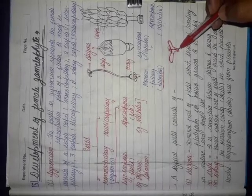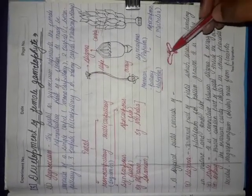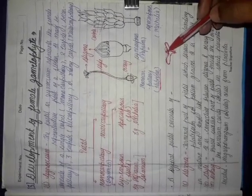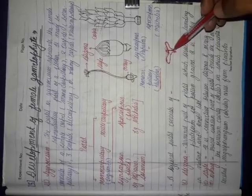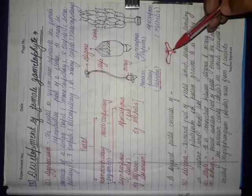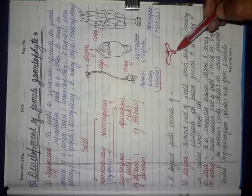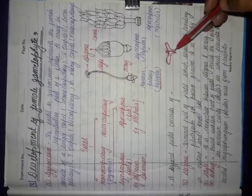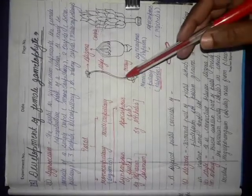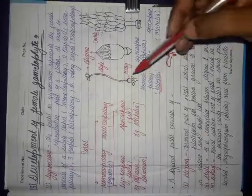An important point: the pollen tube grows in size using the material of the vegetative cell. But after some time the food is exhausted, and at that time the cells of the style are utilized by the germinating pollen tube as food.